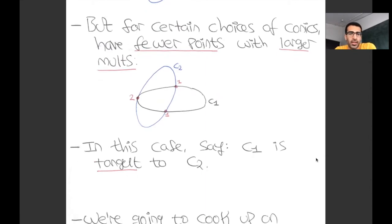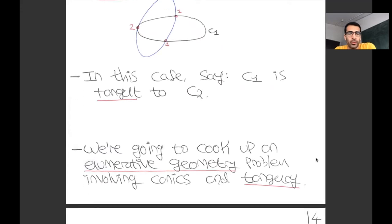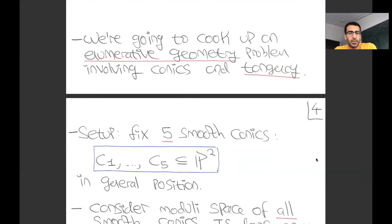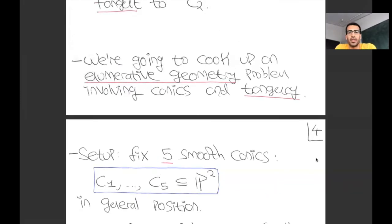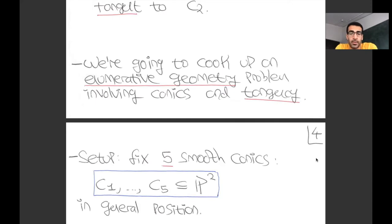Out of this basic geometry I'm going to cook up a problem in enumerative geometry involving conics and tangencies. I'm going to fix five smooth conics in the plane, C1 through C5, in general position—meaning they're sufficiently generic. The question I'll ask is: how many conics C are tangent to all five of C1 through C5 simultaneously? I claim that when I consider that special class of conics, I actually just get finitely many.